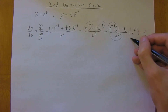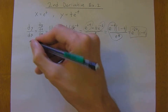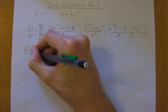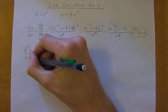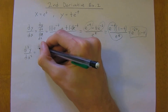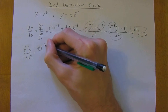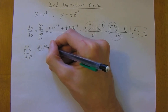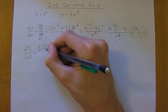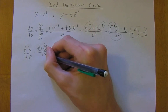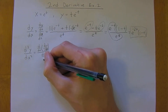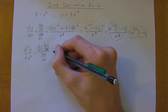Okay, so this is a good form now. So now we want to take the second derivative. The second derivative of y with respect to x is d/dt of the first derivative dy/dx, all divided by dx/dt.